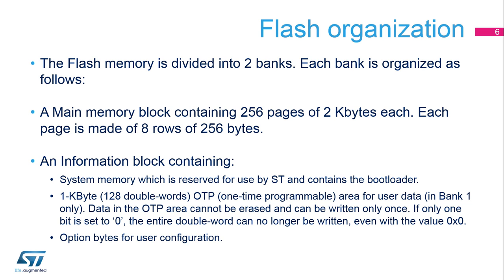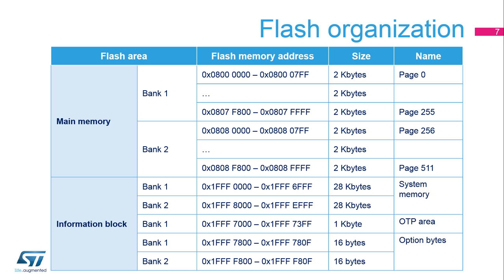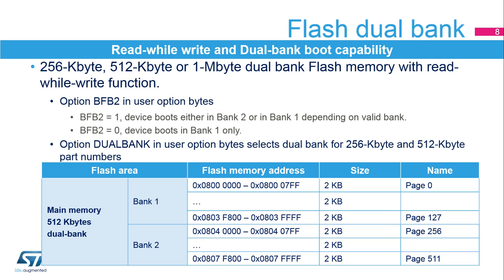The last part contains the option bytes for configuring user options. This slide shows the flash memory map. There are 256 pages in bank 1, starting from page 0, and 256 pages in bank 2, starting from page 256. The page number MSB corresponds to the bank number. The page number is used in the software procedure to erase a page. The flash is dual-bank memory with read-while-write and dual-bank boot capability, able to boot from either bank 1 or bank 2.